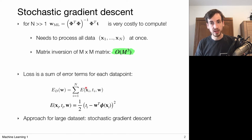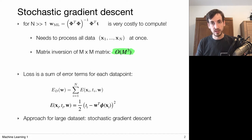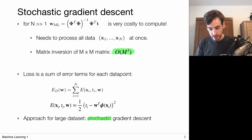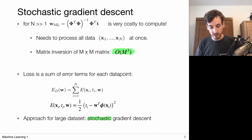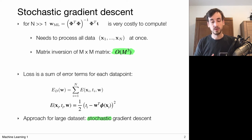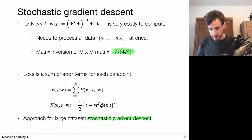We pick one data point, look at the error, and tune the W parameters a little bit to minimize the error for that particular data point. Then we move on to the next data point and tune W again. This leads to the stochastic part of our solution: rather than using the precise total error, we approximate it using just a subset of data points, or maybe even one data point at a time.